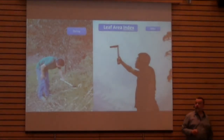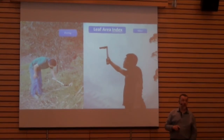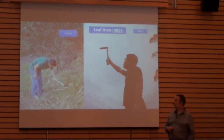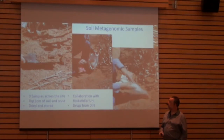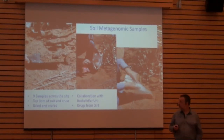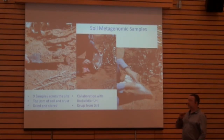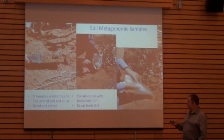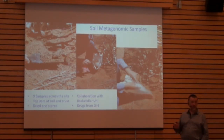We collect LAI information, which is really useful to calibrate a whole lot of remote sensing products, collected across our plot. We also collect a suite of soils information — what we call our soil metagenomic samples. At nine places across our plot, we take the top three centimetres of topsoil, put into a calico bag then into a plastic bag with silica so it's dried as rapidly as possible, and that becomes available for genetic analysis.